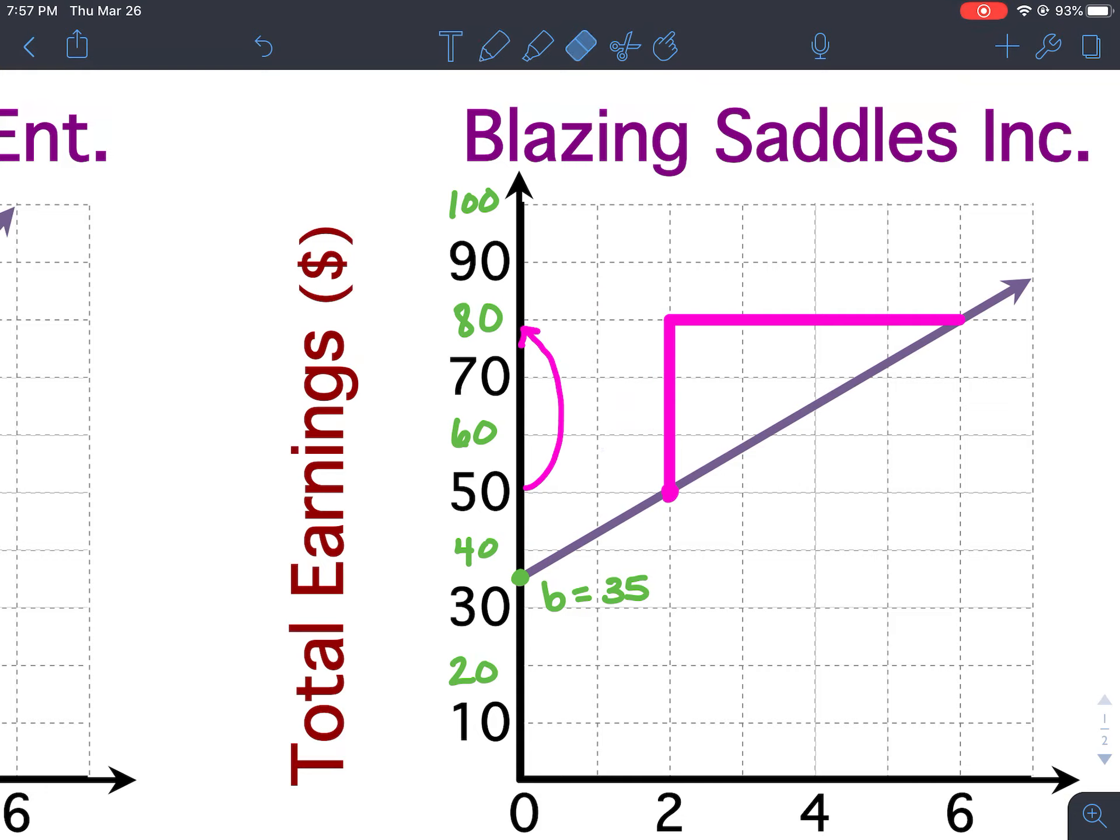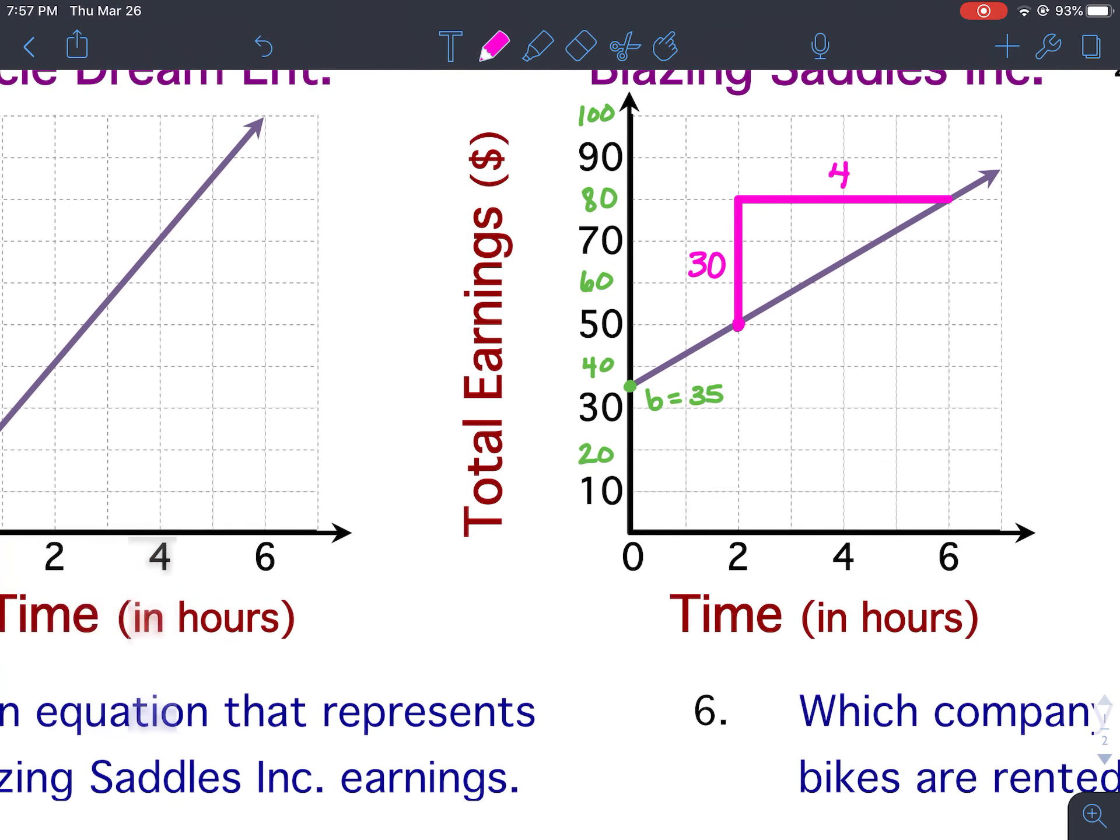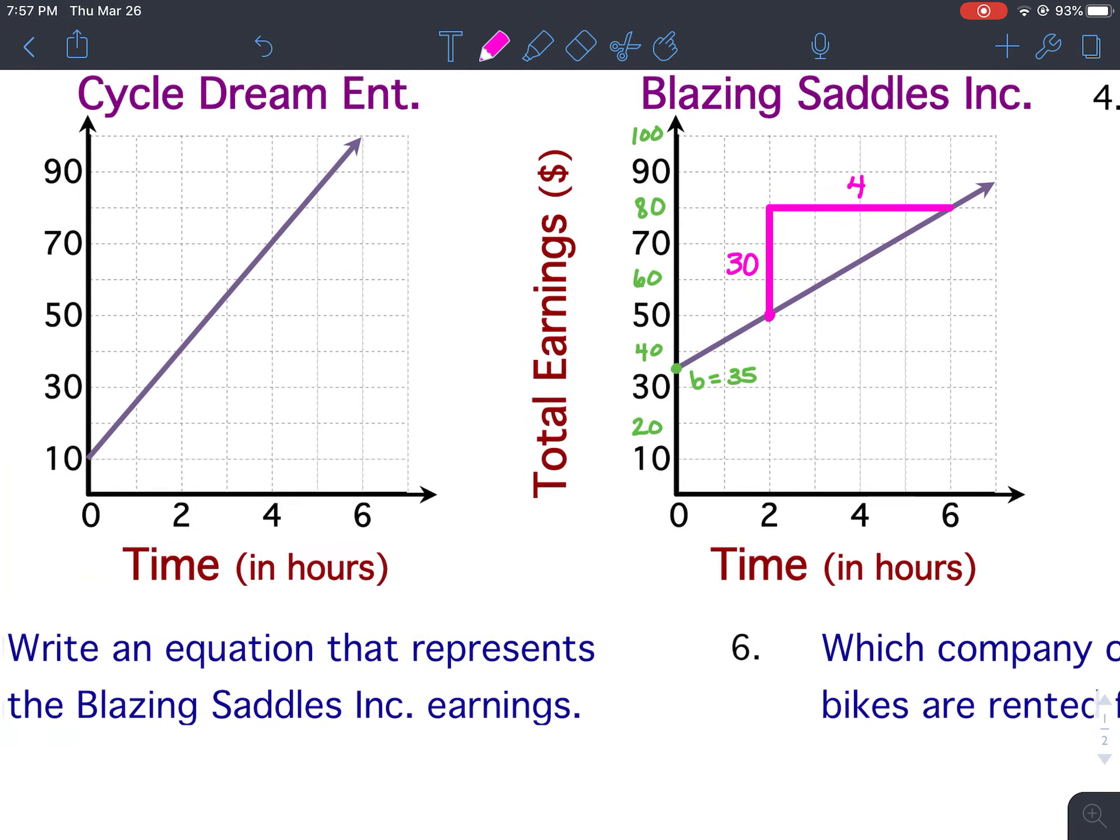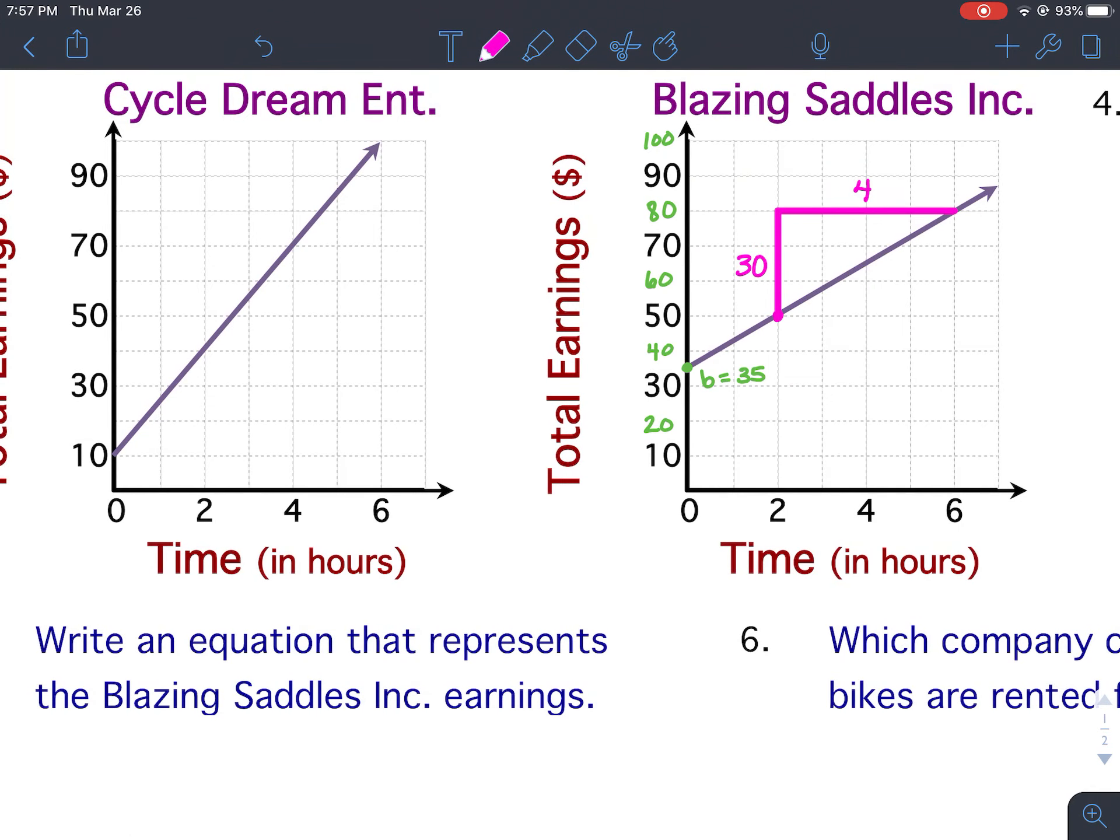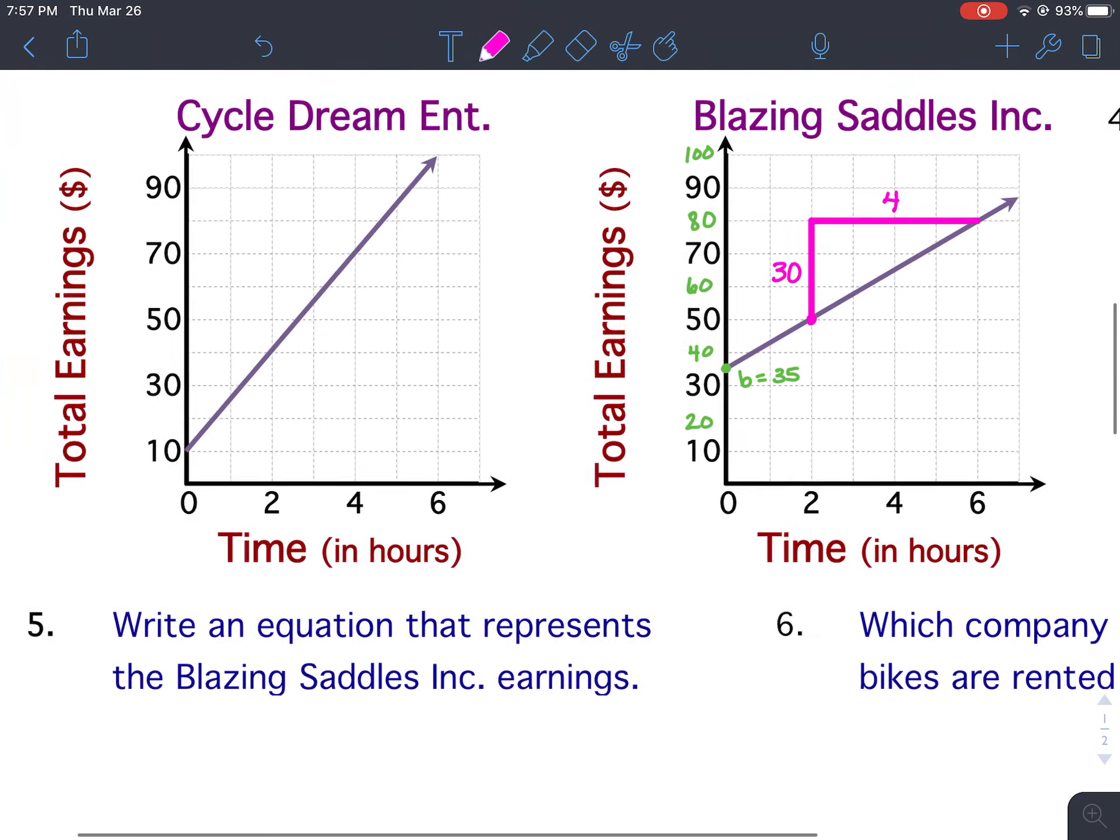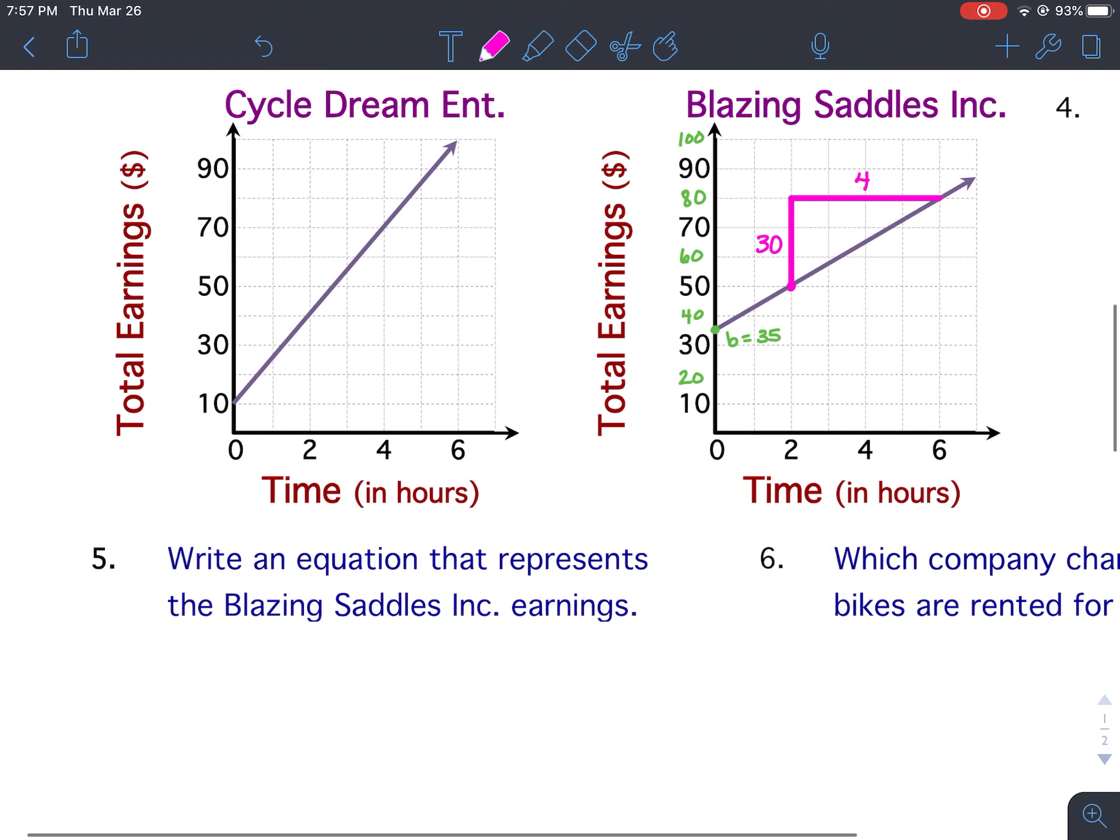We're not counting the grid lines, because each grid line goes up by 10. So it goes from 50 to 80, which means it rises 30. And then the run would be 4. So given that information, we can now find our rate of change, and we know the initial value, so we can write our equation for Blazing Saddles. So let's start with the rate of change.